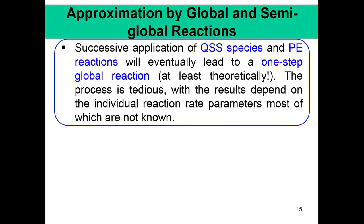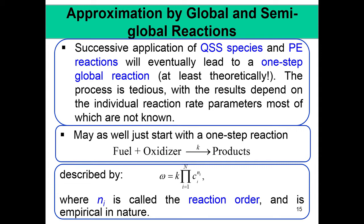In practice, QSS and partial equilibrium approximations are successively applied and, at least theoretically, can reduce the system to a one-step global reaction. However, the process is tedious and results depend on individual reaction rate parameters, most of which are not known. The result is a global approximate semi-global reaction: fuel + oxidizer → products. This comes at the penalty of losing the detailed fidelity of the reaction mechanism, but is useful for approximate calculations.